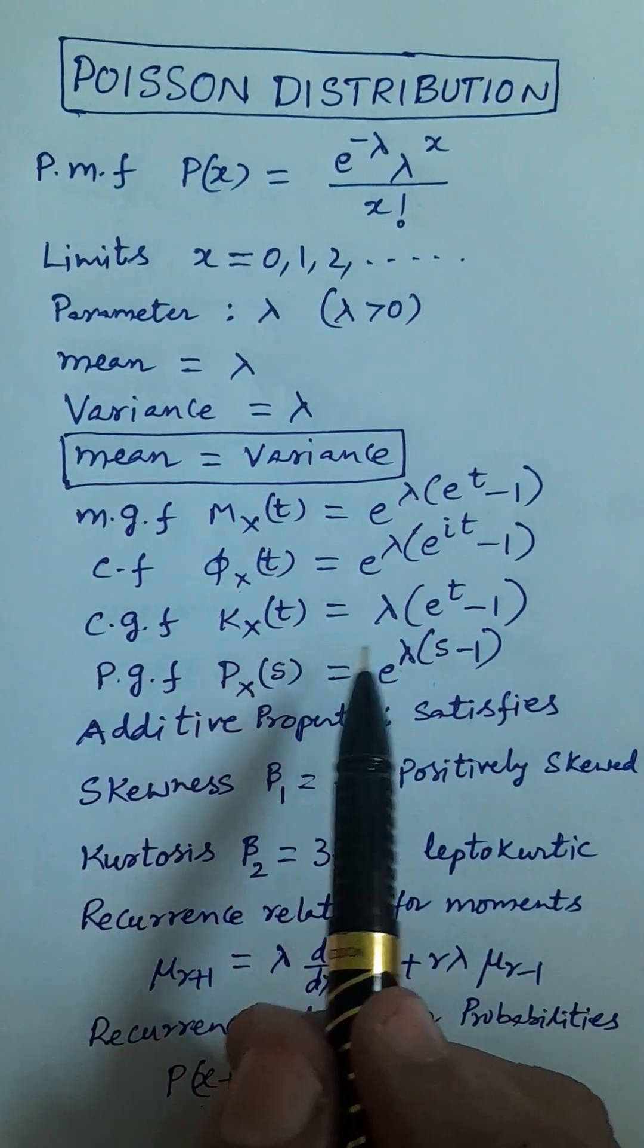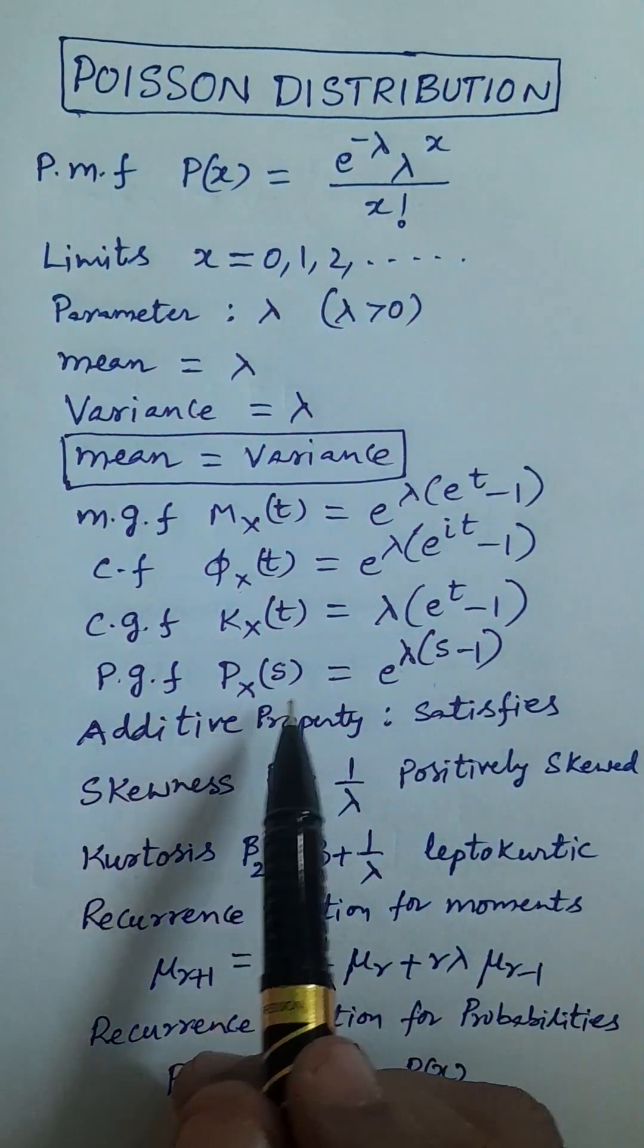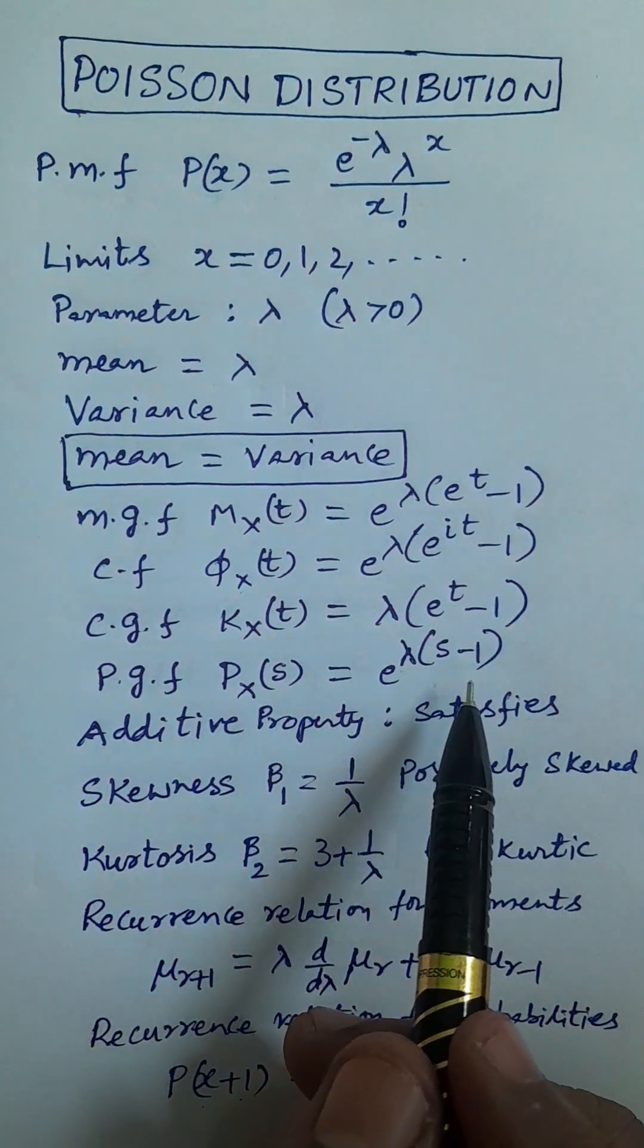CGF: K_X(t) is equal to lambda into E power t minus 1. PGF: P_X(s) is equal to E power lambda into s minus 1.